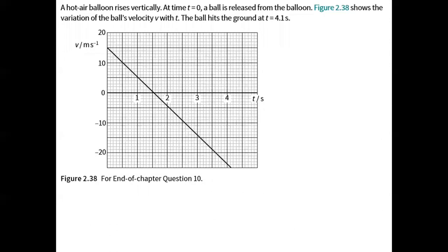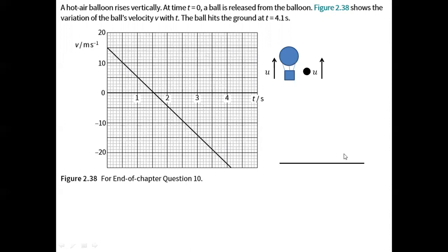Second problem: a hot air balloon rises vertically. At time t equals 0, a ball is released from the balloon. The figure shows the variation of the ball's velocity v with respect to t. The ball hits the ground at time equal to 4.1 seconds. The balloon rises vertically, and since the ball and balloon are considered one system, once the ball is released it will also have the same initial velocity directed vertically upwards.